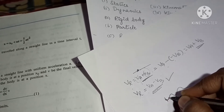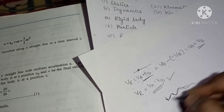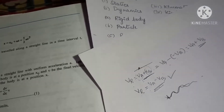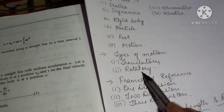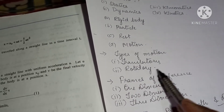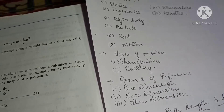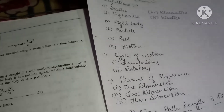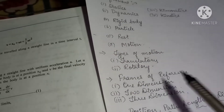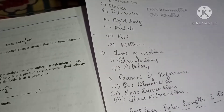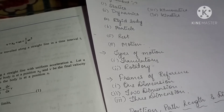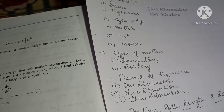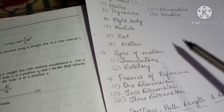Types of motion include translatory motion and rotatory motion. In translatory motion, particles move in one direction. In rotatory motion, particles at the axis remain stationary while surrounding particles revolve around that axis.